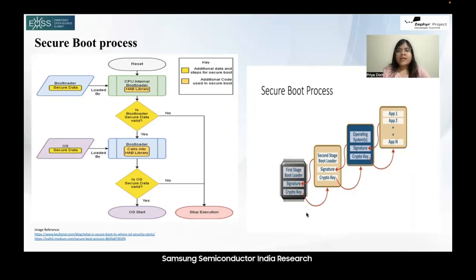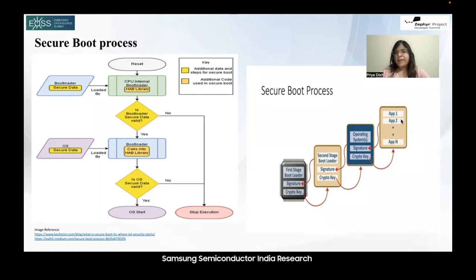In secure boot, the first-stage bootloader is programmed into a non-readable storage location on the device. The first-stage bootloader then calculates the hash value of the second-stage bootloader and verifies it against the stored hash value. Similarly, depending on the hierarchy — for example, if we have a two-stage bootloader — we repeat this process. Then we verify that the operating system and all applications in the sequence are valid. In this chain, we validate each layer and once it is trusted, we proceed to validate the next layer.